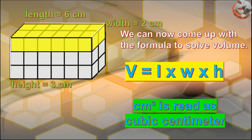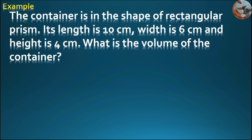Cubic cm is read as cubic centimeter. Let's have an example. The container is in the shape of a rectangular prism. Its length is 10 cm, width is 6 cm, and height is 4 cm. What is the volume of the container?